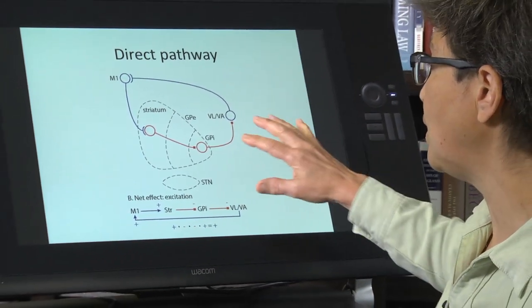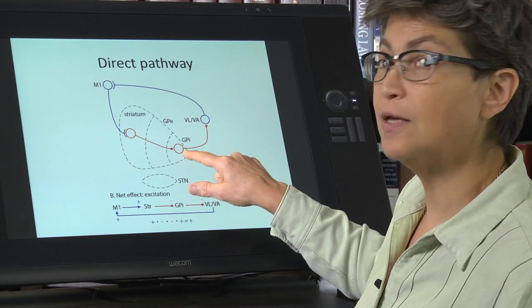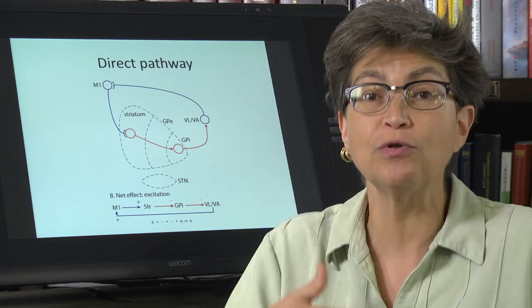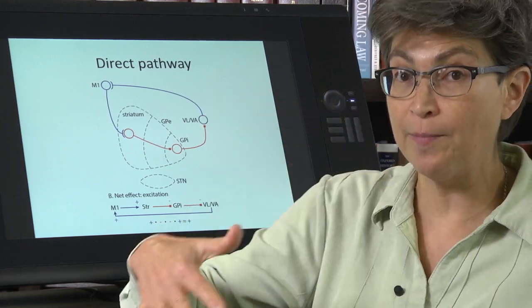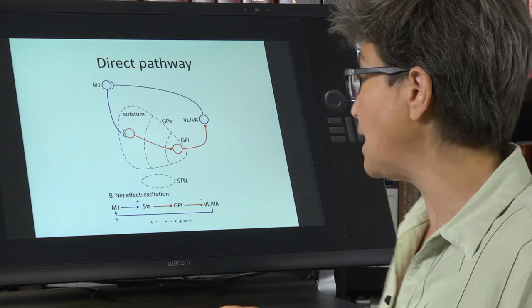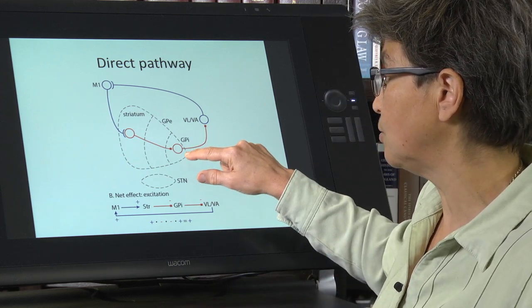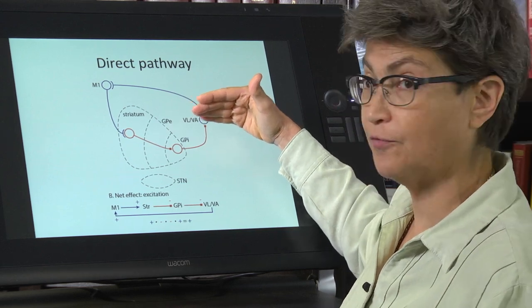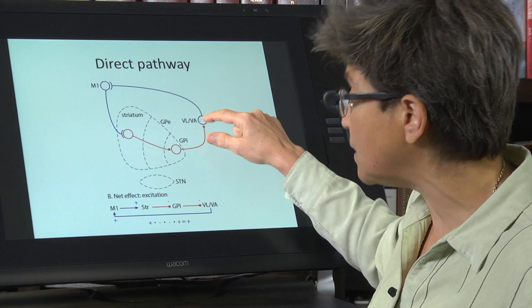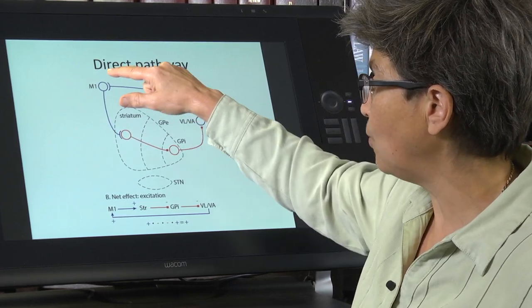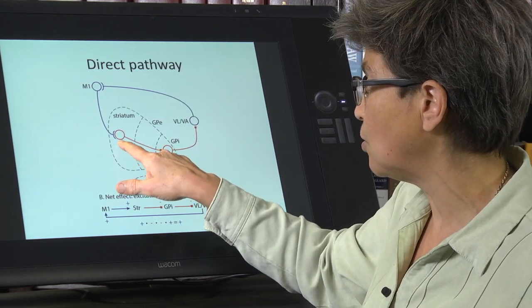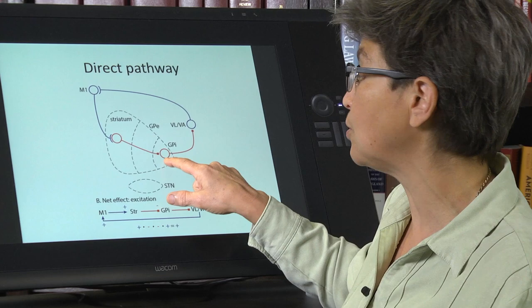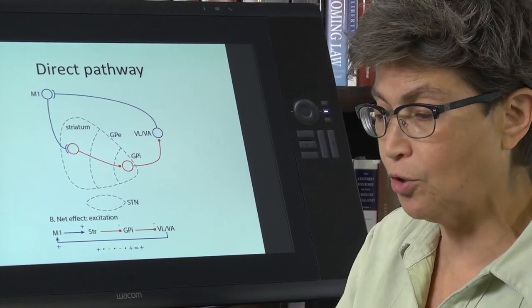The way to think about this is you have inhibited the resting, default inhibition. By inhibiting the inhibition, you have disinhibited — you have released these thalamic neurons from their ongoing inhibition. These neurons in the internal globus pallidus have resting discharge; otherwise there wouldn't be this default inhibition of movement. So they are always inhibiting the thalamic neurons, and when the direct pathway is engaged, these neurons will prevent the globus pallidus internal cells from inhibiting the thalamic neurons — inhibiting the ongoing suppression of movement.